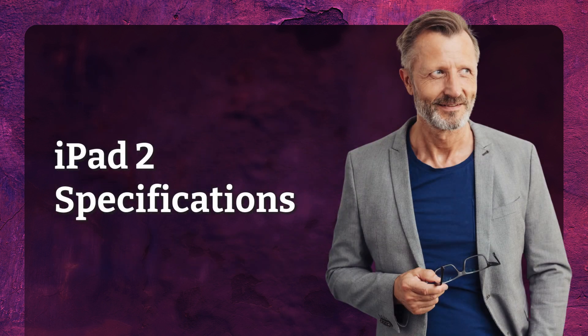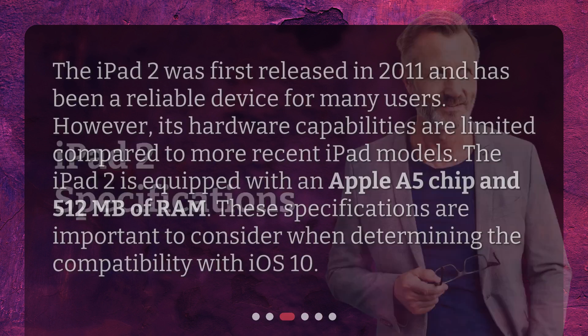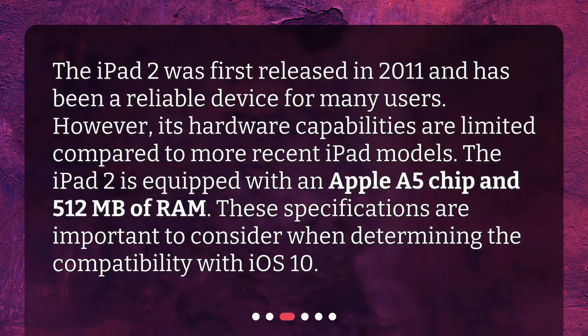iPad 2 Specifications. The iPad 2 was first released in 2011 and has been a reliable device for many users. However, its hardware capabilities are limited compared to more recent iPad models. The iPad 2 is equipped with an Apple A5 chip and 512 MB of RAM. These specifications are important to consider when determining the compatibility with iOS 10.